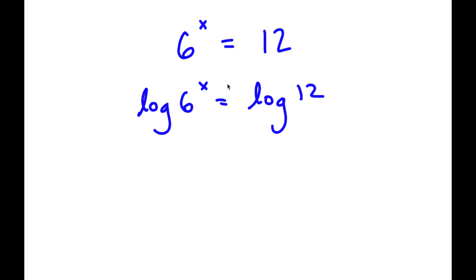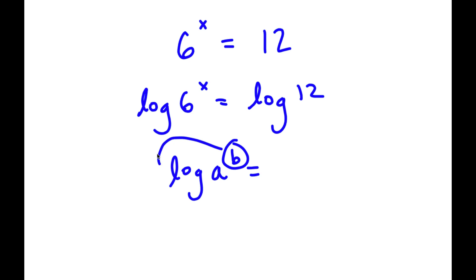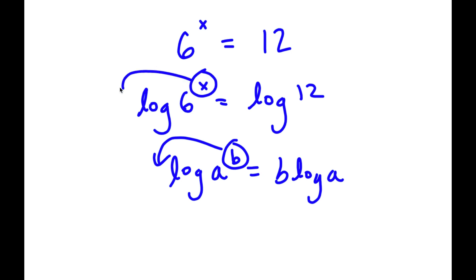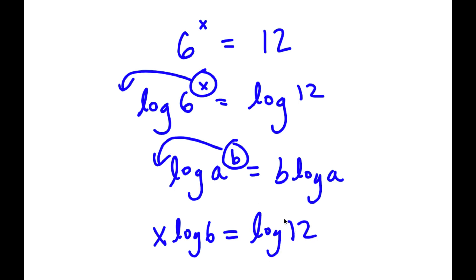Now, if I have something in the form log a to the power of b, I can simply move the exponent b to the front. So this is going to equal b times log a. So in this case, log 6 to the power of x — I can move x to the front — so that's going to equal x times log 6, which is equal to log 12.